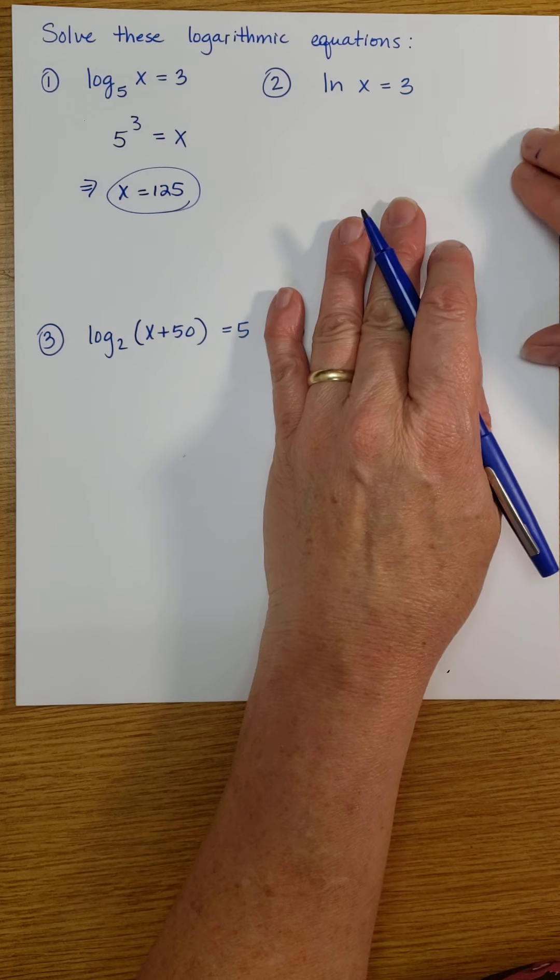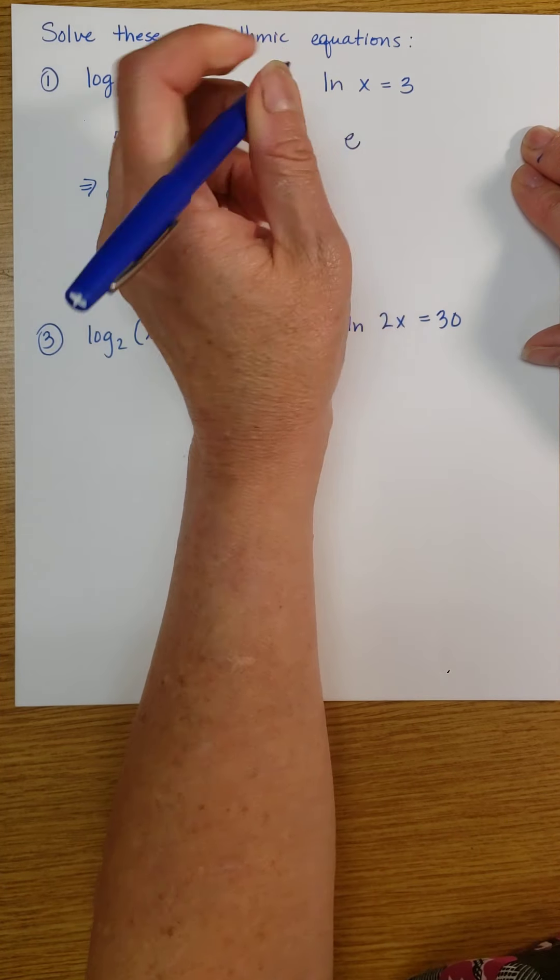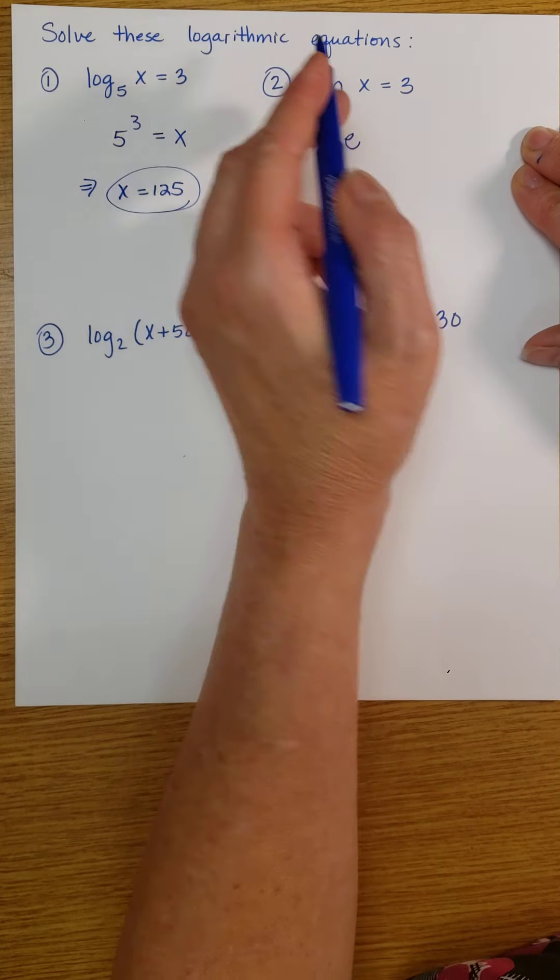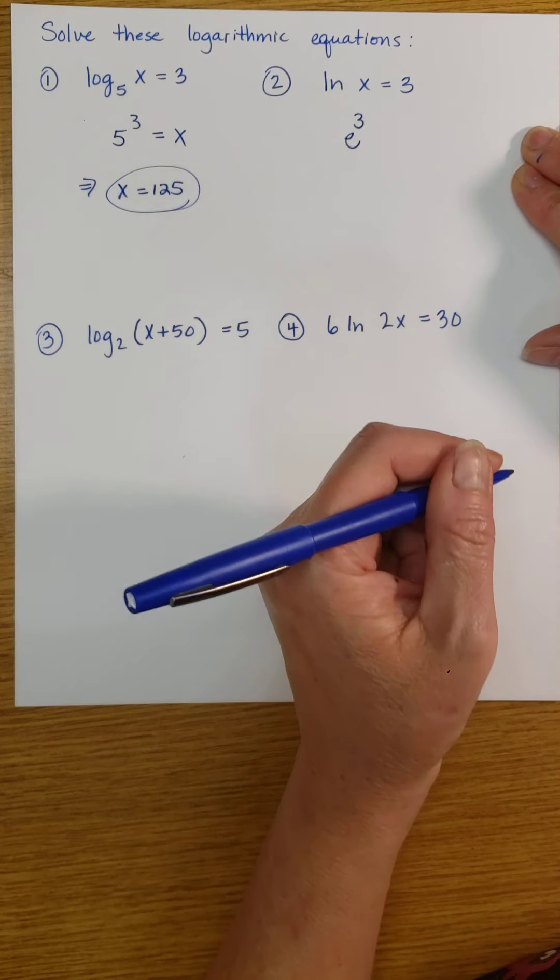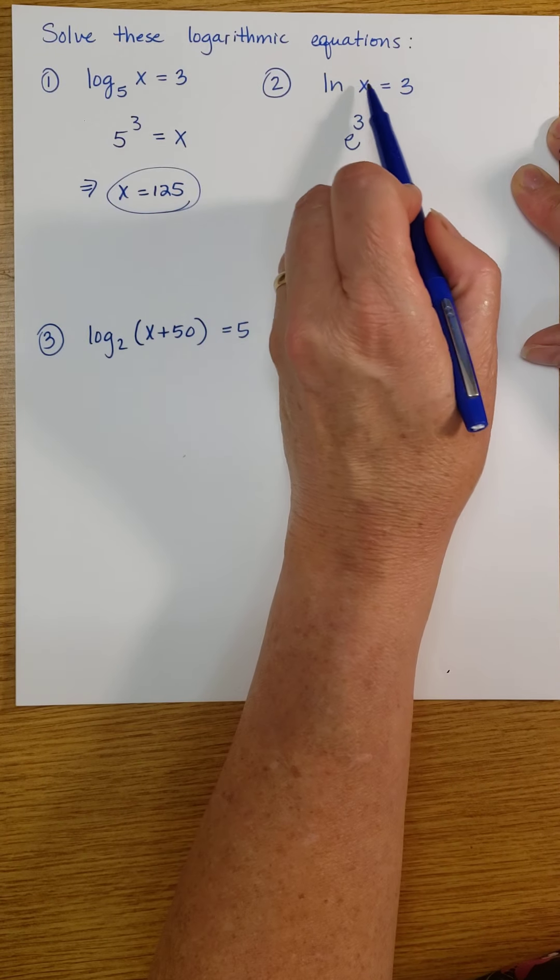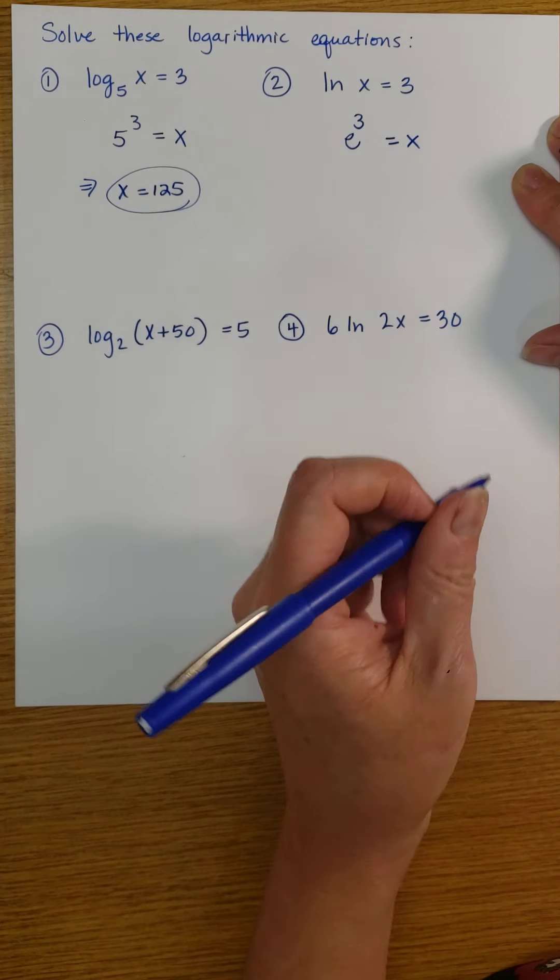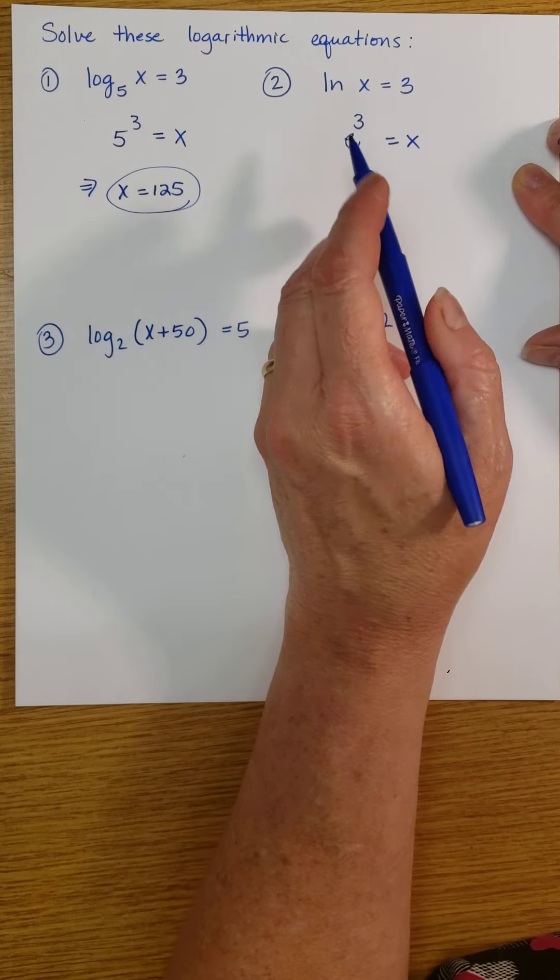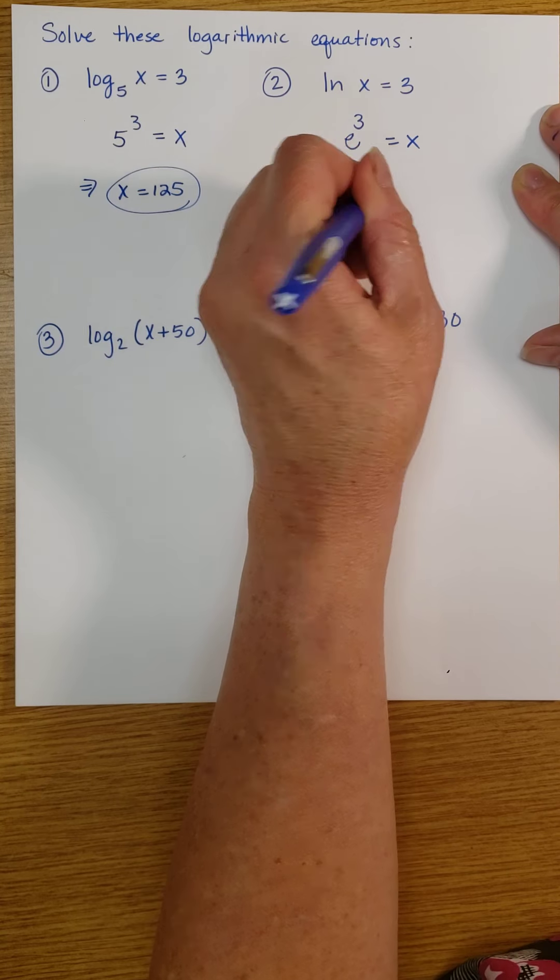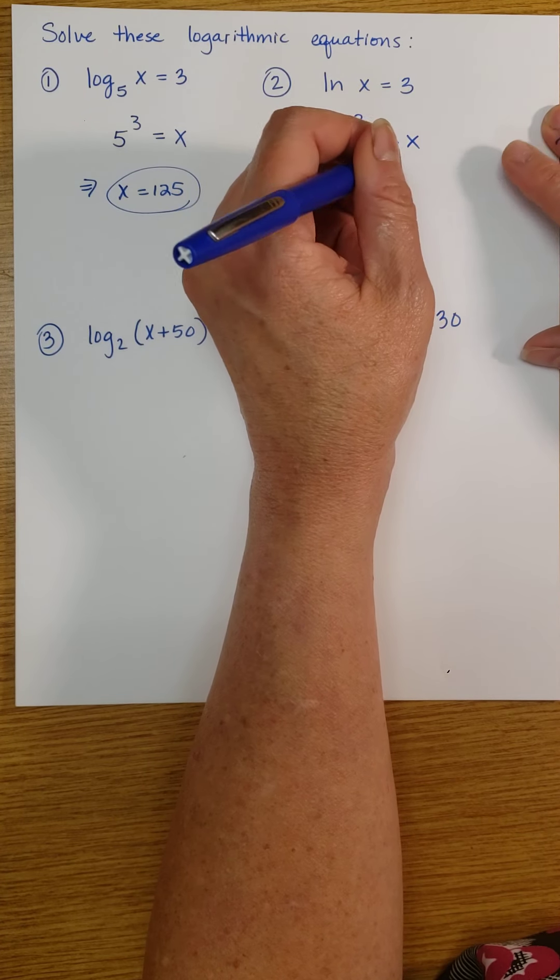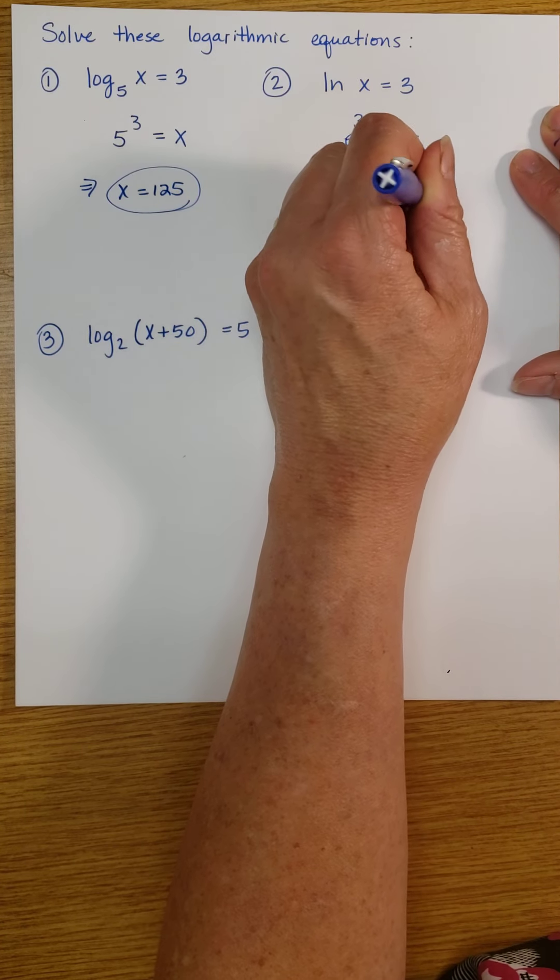Here the base is e. The log is the exponent, so I'm going to put the 3 on the base like that, and what's left is the x. And we just need to calculate this on our calculator, and we get that x is equal to e cubed, which is 20.09.